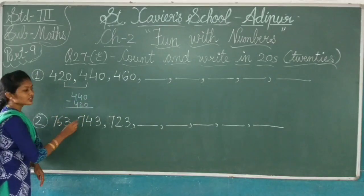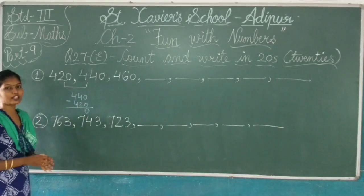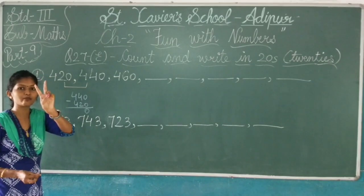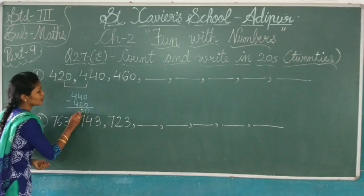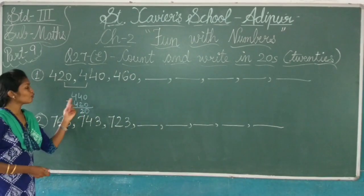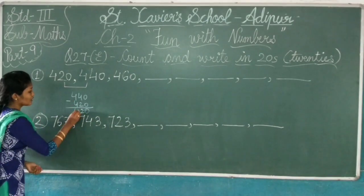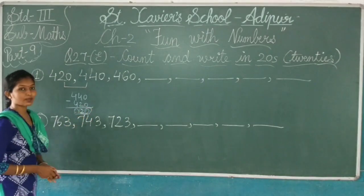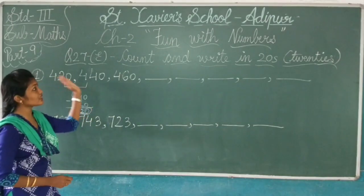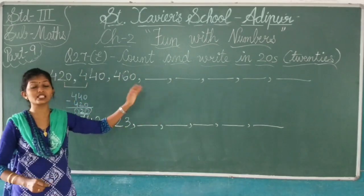0 minus 0 is 0. 4 minus 2. 4 minus 2 is how much? Number 2. Now 4 minus 4 is 0. So 20. So how much does it cost? 20.